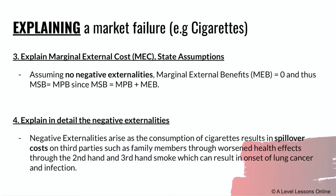Next, we explain the marginal external cost (MEC). Assuming there are no positive externalities, the marginal external benefit would be equivalent to zero — meaning the additional external benefit to society is zero. Thus MSB equals MPB, since the societal value equals the private value plus the external value of third parties. This is a classic equation covered in the previous video.